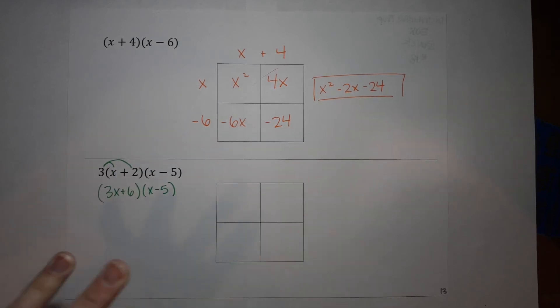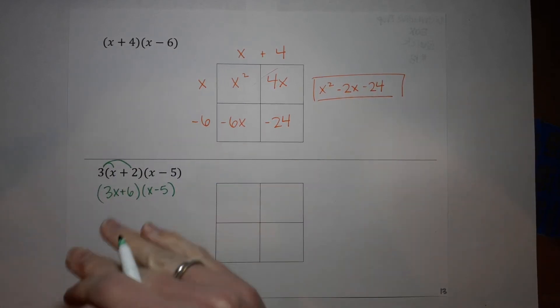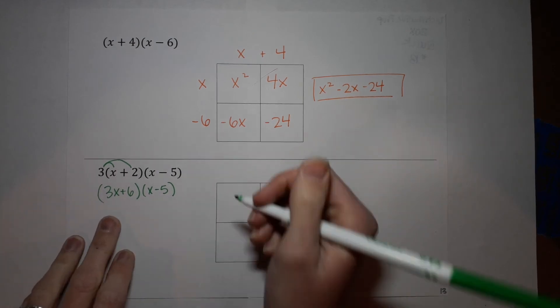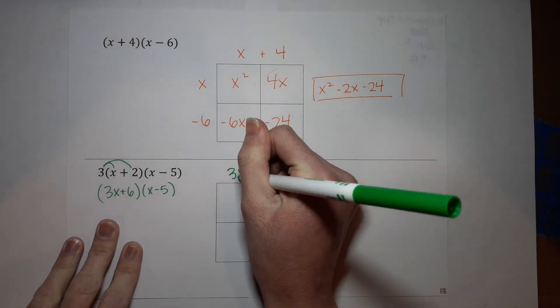Now you might say, why aren't you multiplying it to that one as well? Well, now that it's in here, when I multiply it to this, the three will go there as well. So you don't need to do it to both of them. It will get to both of them once we multiply them all. Okay, so now I'm going to write this one up here, three x plus six.